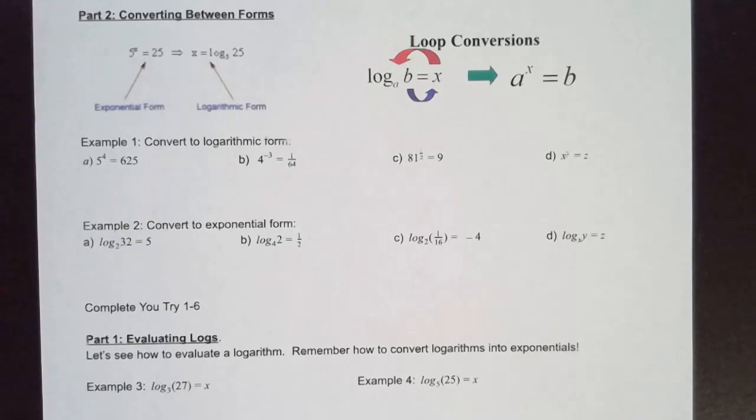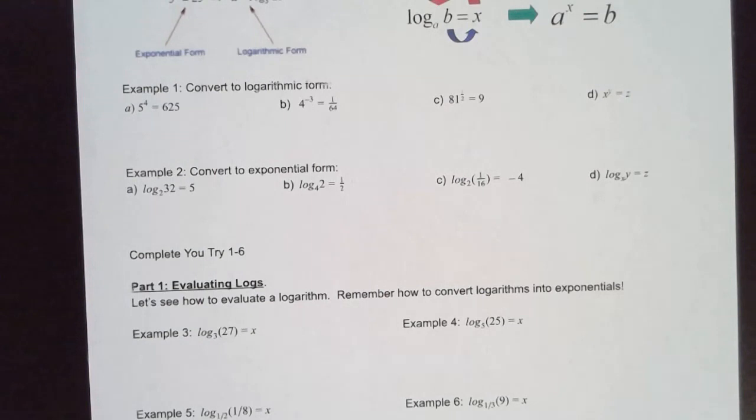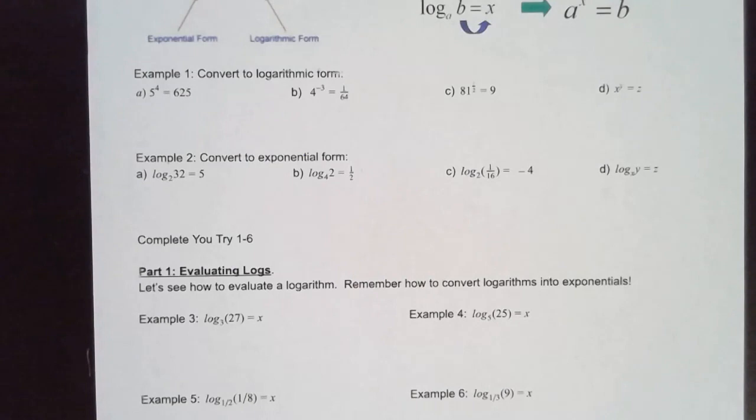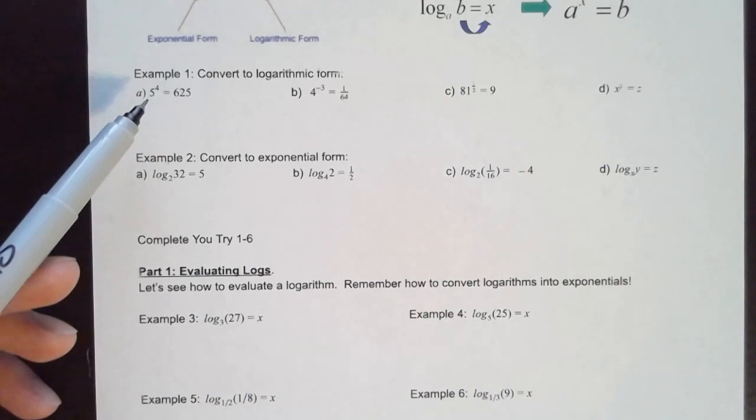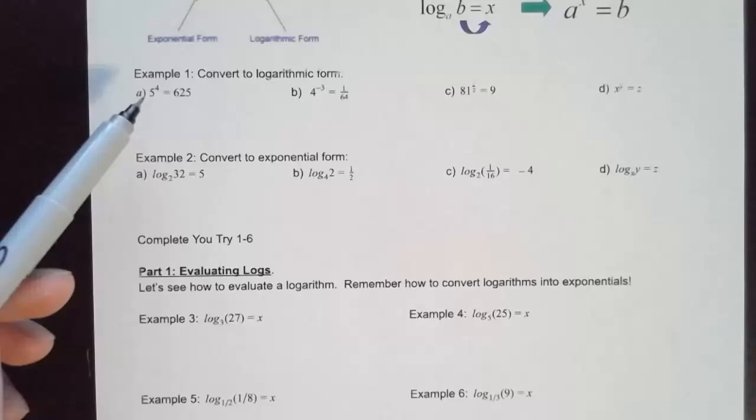Let's look at example one — we're not solving anything here, just converting to the other form. These are all in exponential form and we are going to convert them to log form. Here our base is 5 and our exponent is 4, so that 4 is going to be on one side of the equation by itself, and then we have log base 5 of 625.